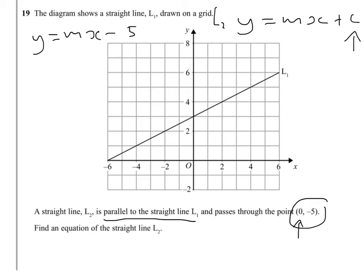Well, the gradient, we have to consider how far across we go for how far up we go. So if I go across 2, then I've also gone up 1. So my gradient then is 1 over 2, which is a half.